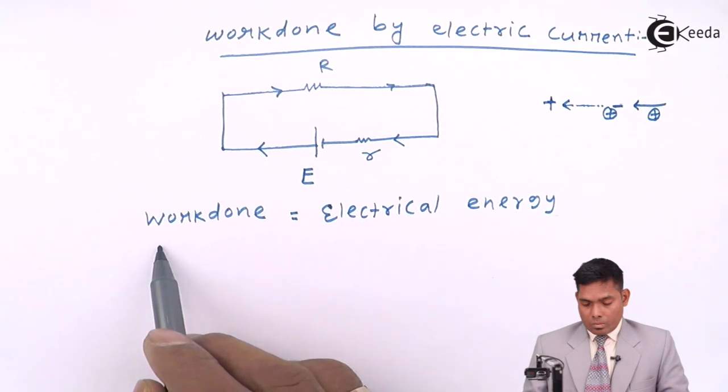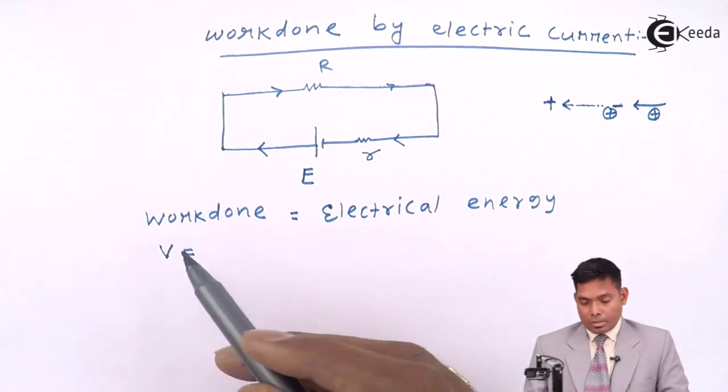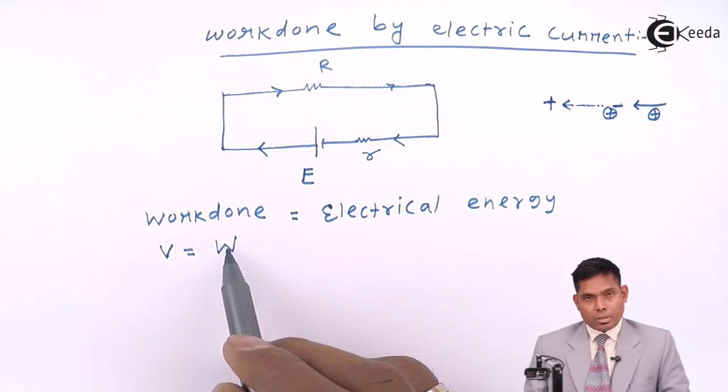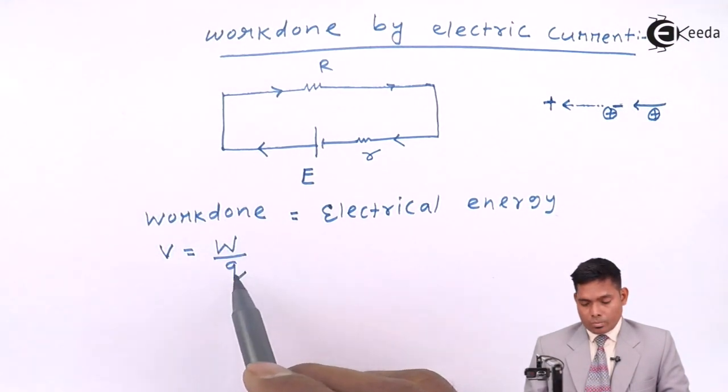Now, V, the potential, is W by Q. This we have known.